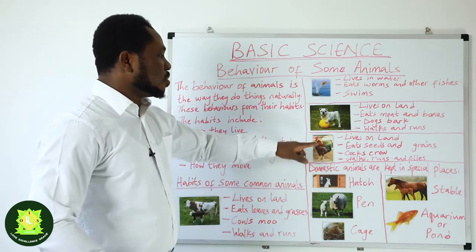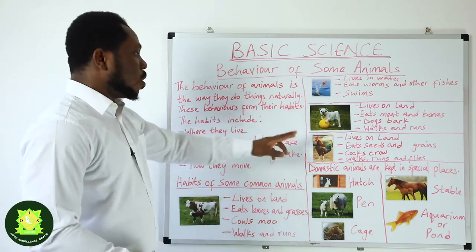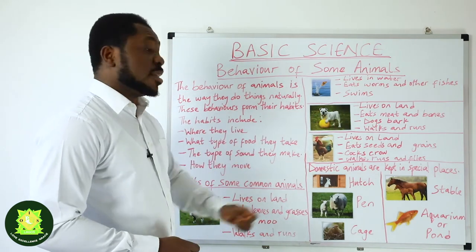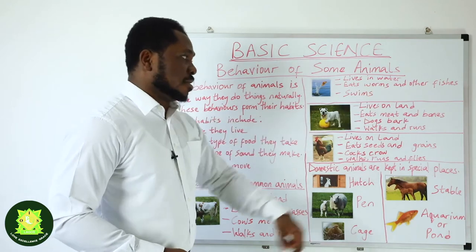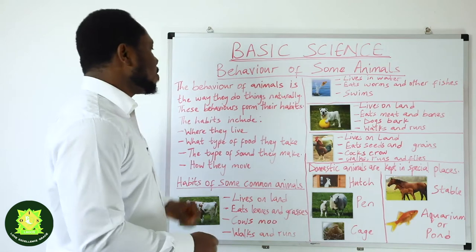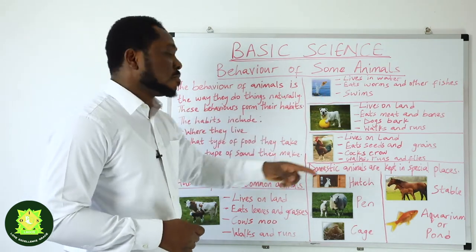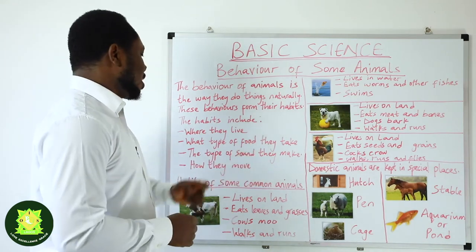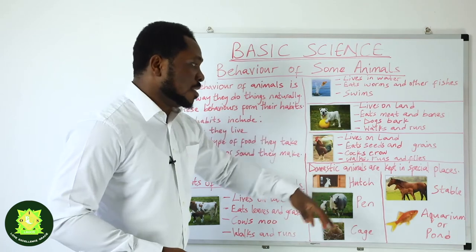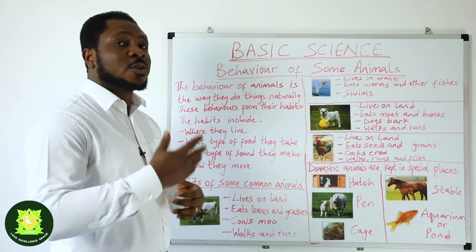Now let us talk about the cock. Where do they live? Just like dog and cow, cock also lives on land. What do they eat? They eat seeds and grains — unlike dogs that eat meat and bones. What sounds do they make? Unlike dogs that bark, cocks crow. And how do they move about? They move about by walking, running, and flying. Cocks can fly, but they cannot fly for a long time like other birds.